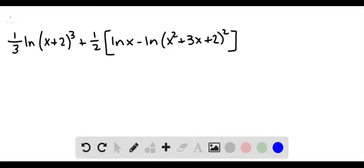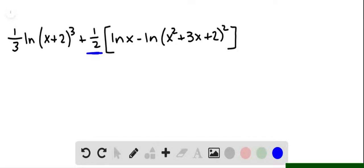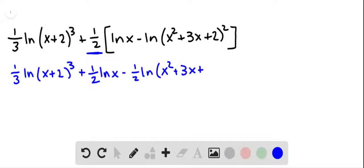And the first thing I would like to do is distribute the 1 half. So we have 1 third natural log of x plus 2 cubed plus 1 half natural log of x minus 1 half natural log of x squared plus 3x plus 2 quantity squared.